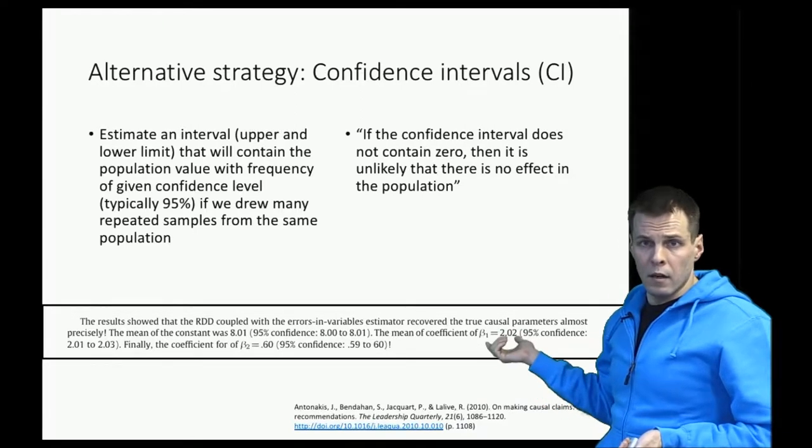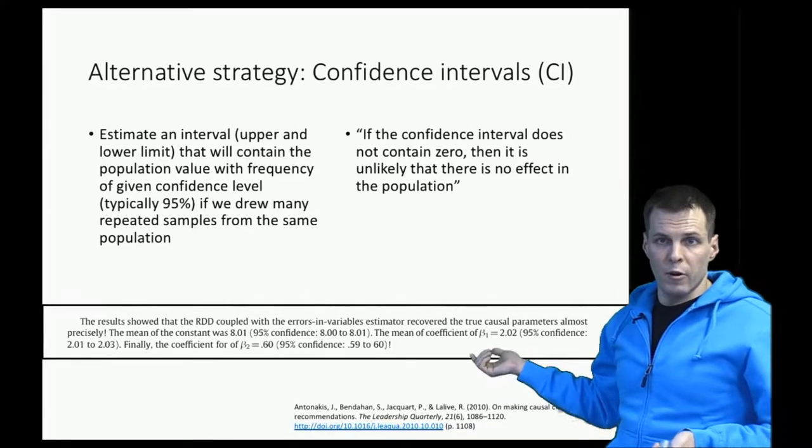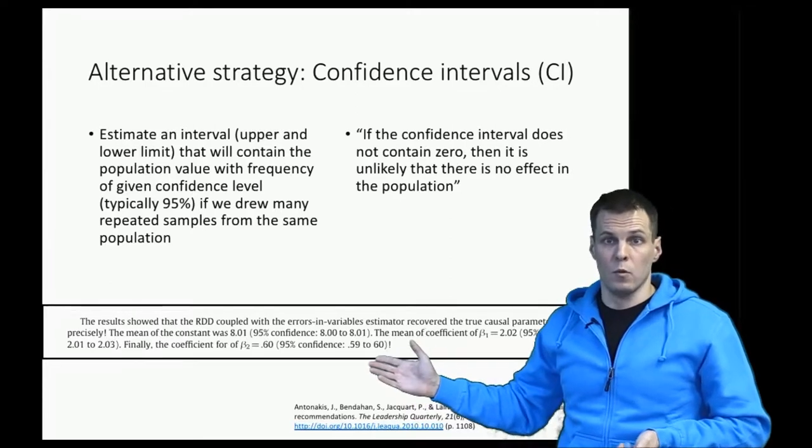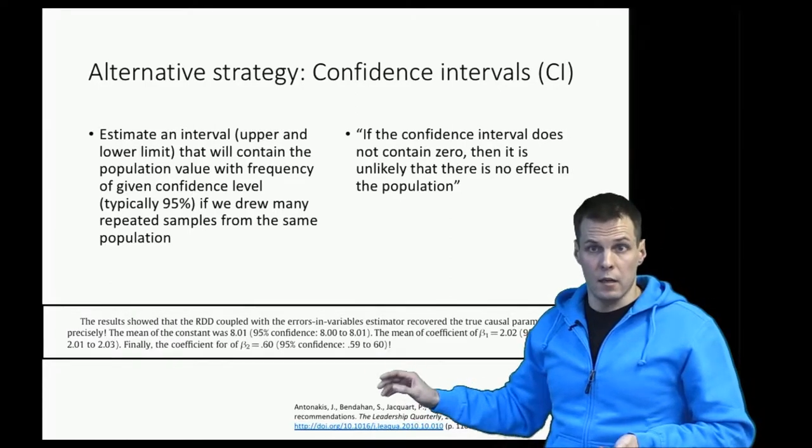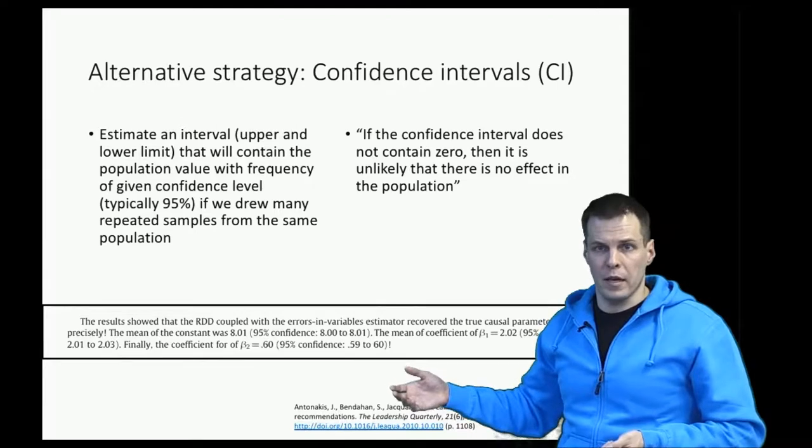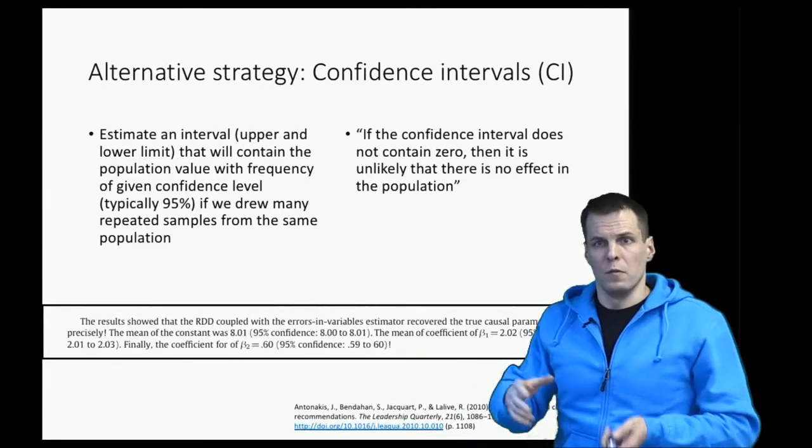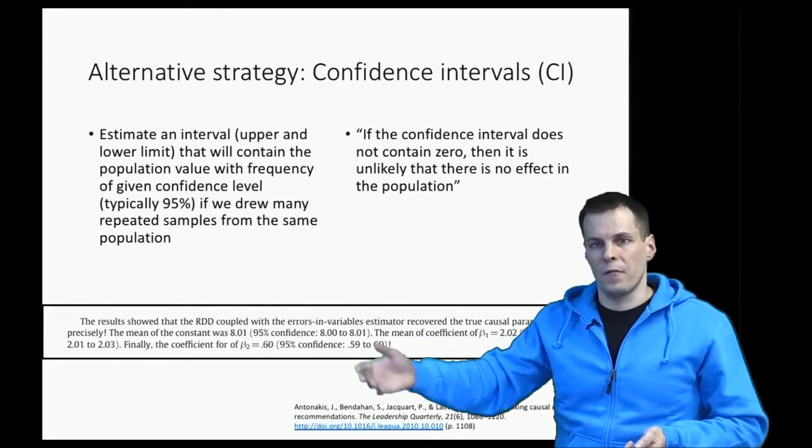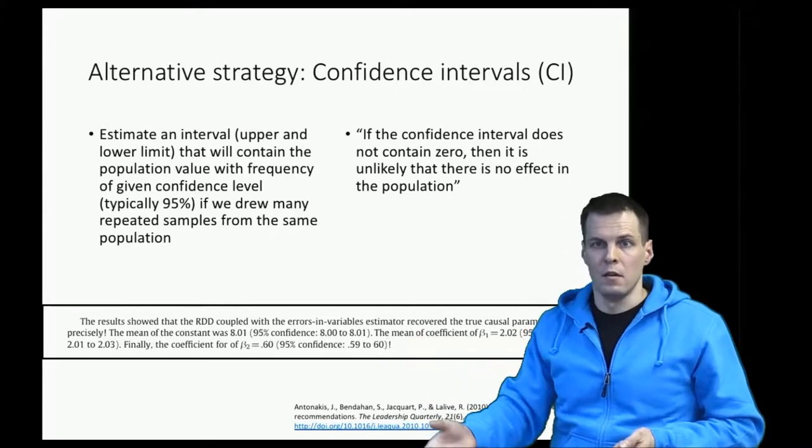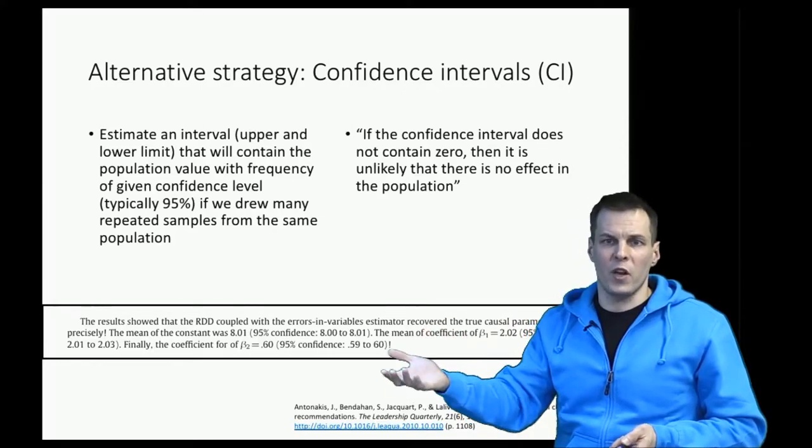Formally, the confidence interval is defined as an interval that is calculated in a way that if we repeat the sample over and over many times, then the true population value will fall within that interval 95 percent of the replications. So five times out of 100 replications the population value would be outside the interval. From this inference we can kind of infer that the population value is maybe somewhere within the interval. We can't say that it's precisely there in any formal way, but we can kind of infer that maybe it's there.